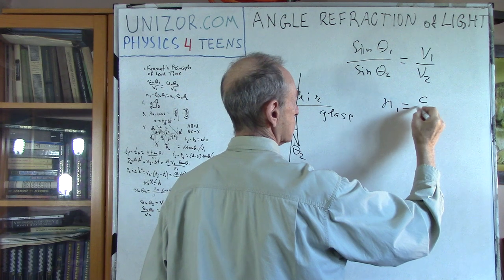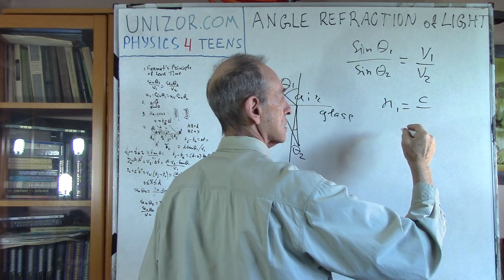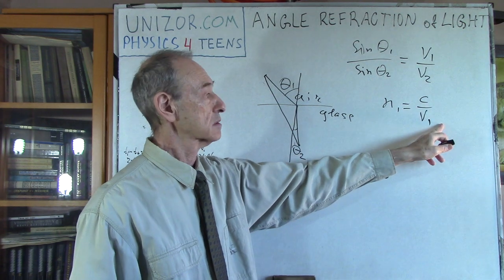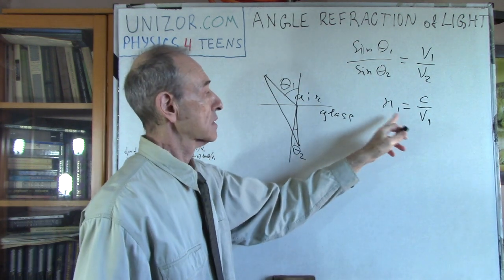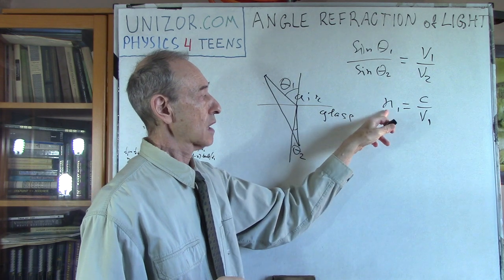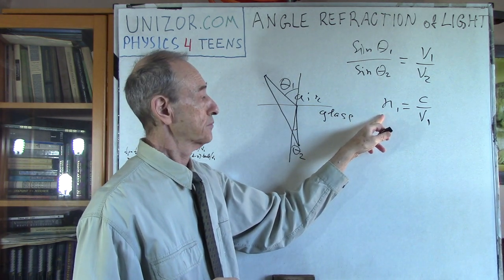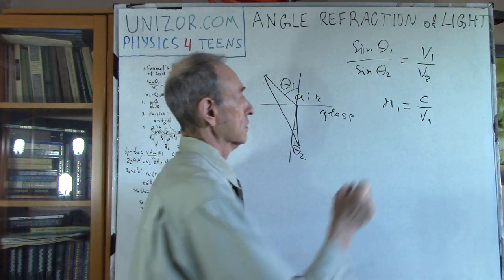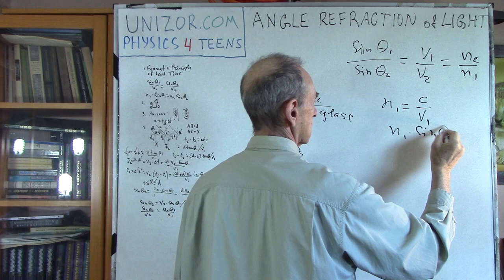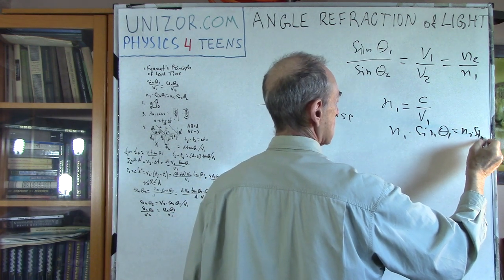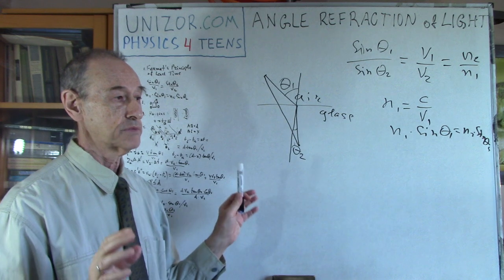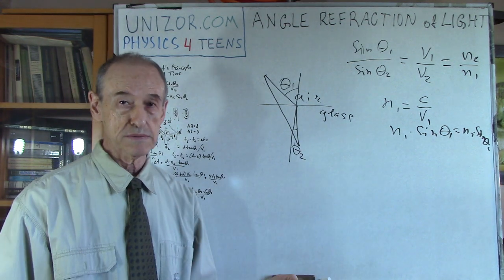We introduce something which is called the refraction index, which is the ratio of the speed of light in vacuum divided by the speed of light in a particular substance. So the lesser the speed of light in the substance, the greater the index of refraction. In this particular case that would be N2 divided by N1, or if you wish, N1 times sine theta1 is equal to N2 times sine theta2. These are the laws of refraction which we derived from Fermat's Principle of Least Time.